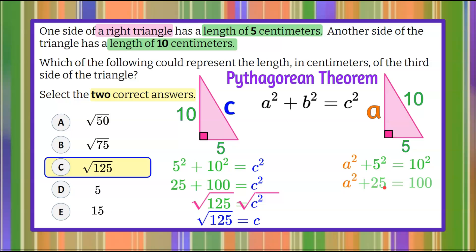5 squared is 25. 10 squared is 100. To solve for A squared, I'm going to subtract 25 from each side, so A squared equals 75. To solve for A, the missing third side, we're going to do the square root of each side. So A is equal to the square root of 75, which is answer choice B, and we have our two correct answers.